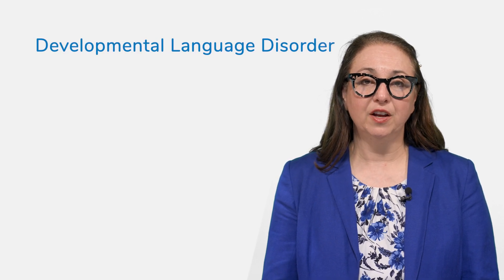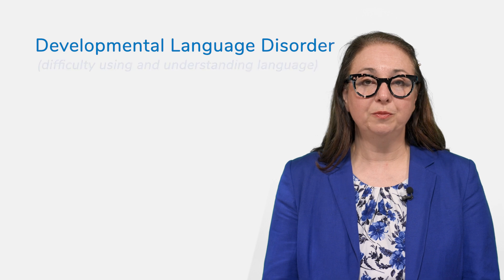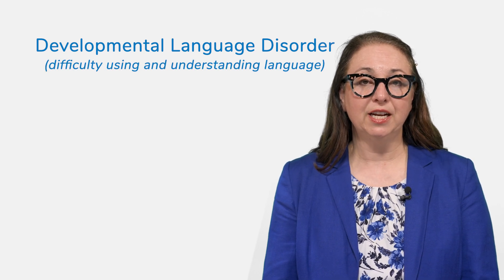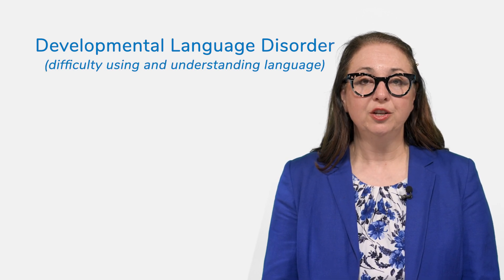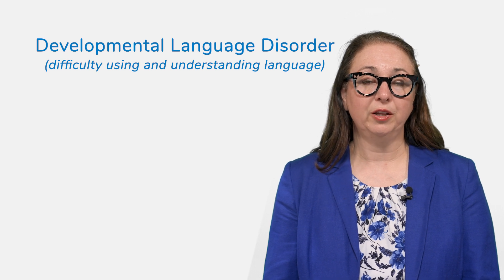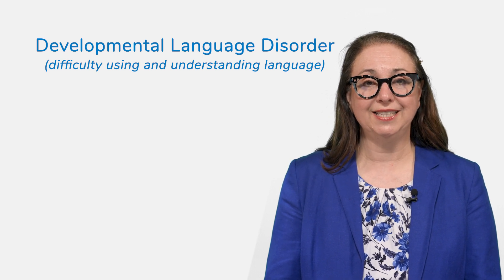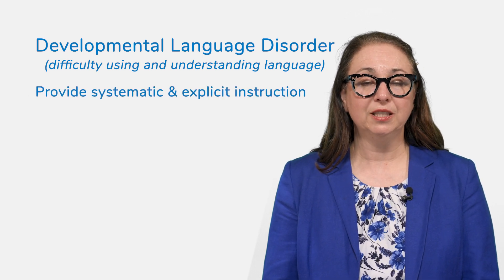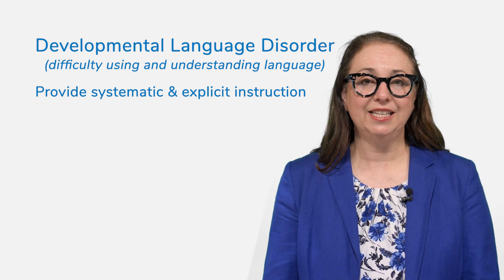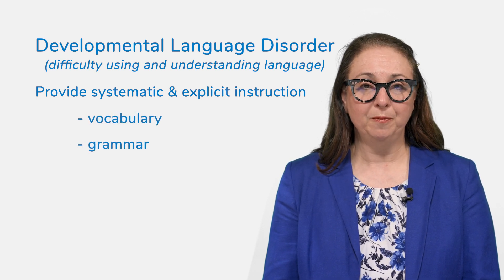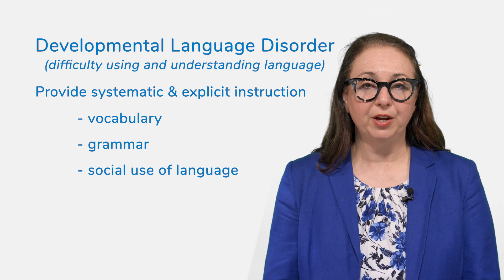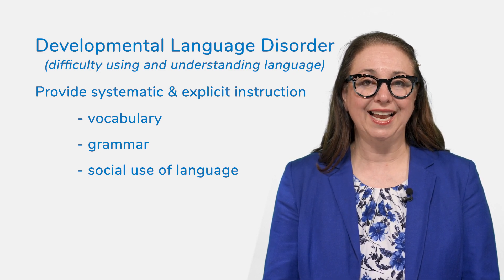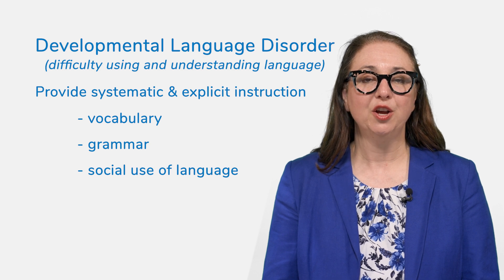If a child has difficulty in language comprehension, that's characterized as having developmental language disorder, which means that a child has difficulty in using and understanding language. To support children with developmental language disorder, often referred to as DLD, we want to explicitly and systematically teach vocabulary words, grammar, and the social use of language so they can understand the language they hear in the environment and the language they read through text.